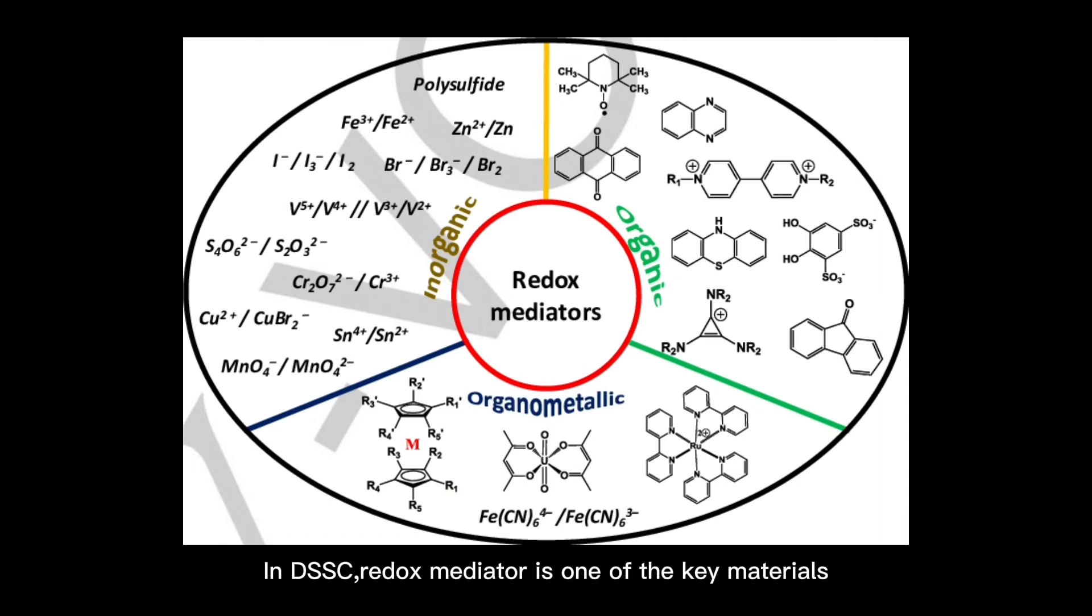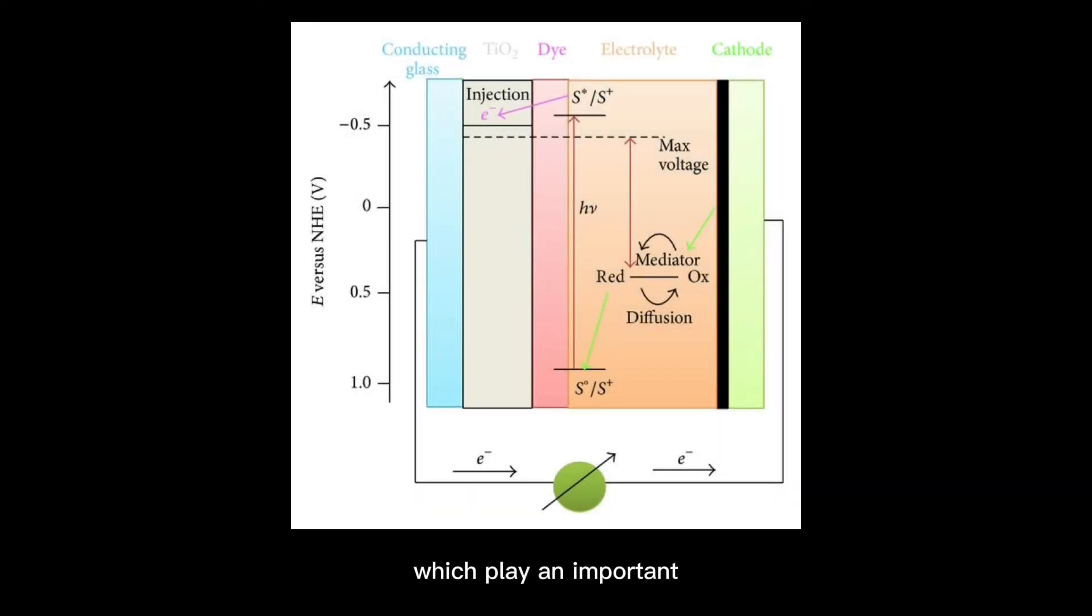In DSSCs, redox mediator is one of the key materials which play an important role to transfer an electron from the counter electrode to the ionized dye.